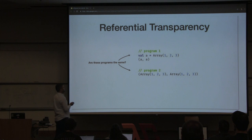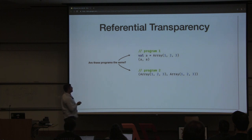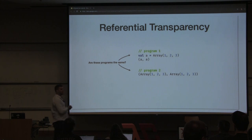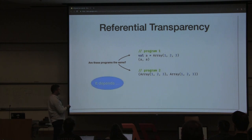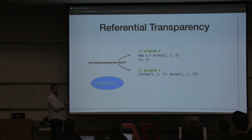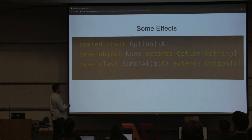And array 1, 2, 3 assigned to A, A versus array 1, 2, 3 and array 1, 2, 3 — is that the same? Someone's saying no, and it depends. In an array, it's going to depend usually on what the contents of the array are. In this case it's probably referentially transparent.